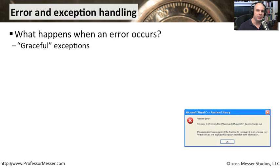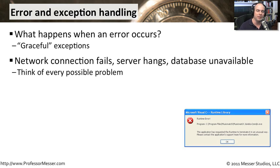Another important consideration when coding is making sure that we have certain routines in place should an error occur. We can't possibly plan for everything, and we should always have a generic message that appears when a problem happens. There should be a graceful process — you shouldn't just get a standard error that pops up from the compiler or scripting language you're using. So if you lose a network connection, the server hangs, or a database suddenly becomes unavailable, you should have a generic message that pops up so you're able to understand what's going on.